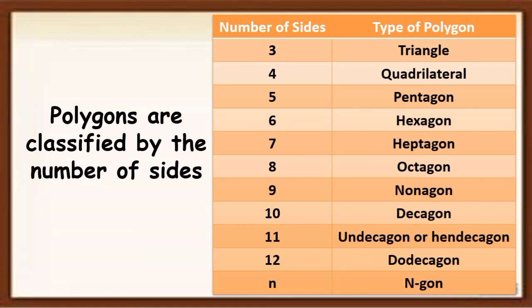Eight sides is octagon, nine sides is nonagon, ten sides is decagon, eleven sides is undecagon or hendecagon, twelve sides is dodecagon. And if the sides of the given polygon is more than twelve, that is n-gon.